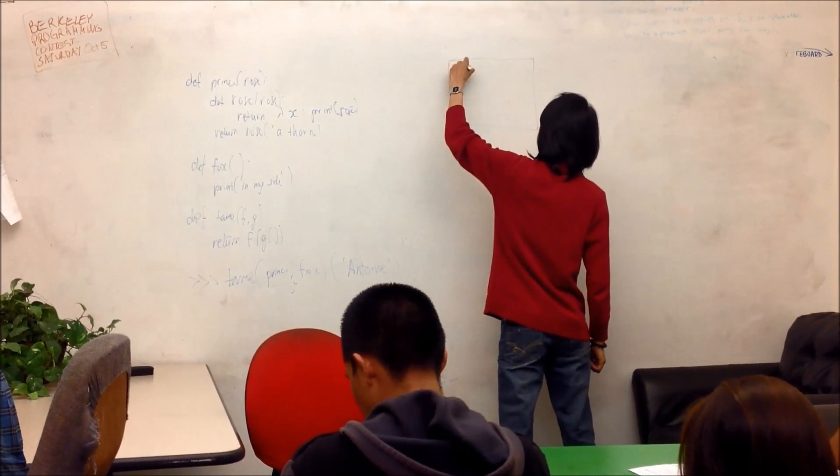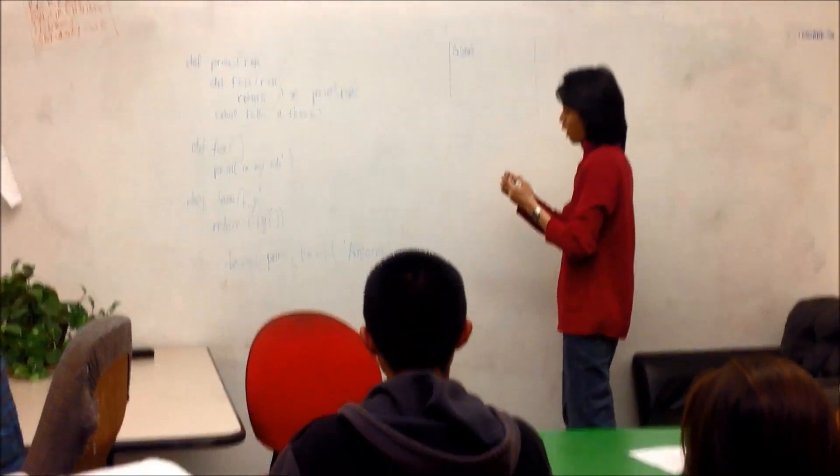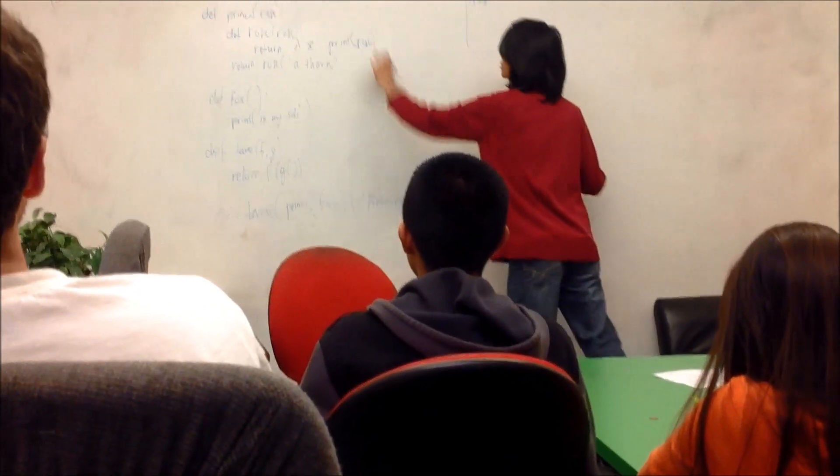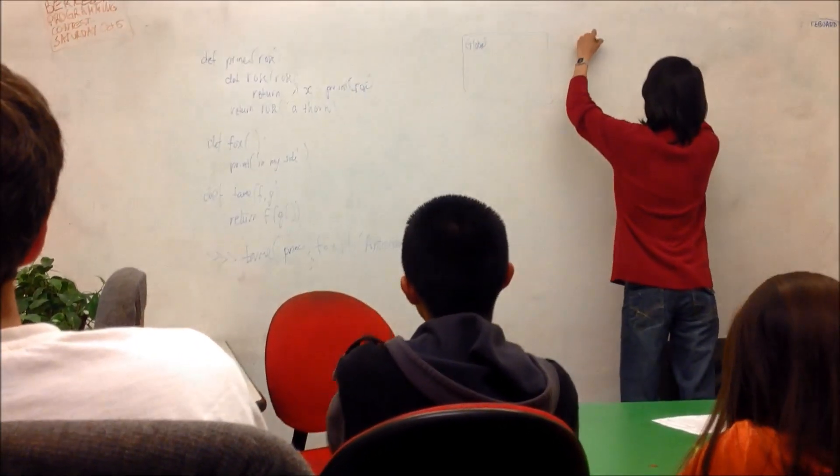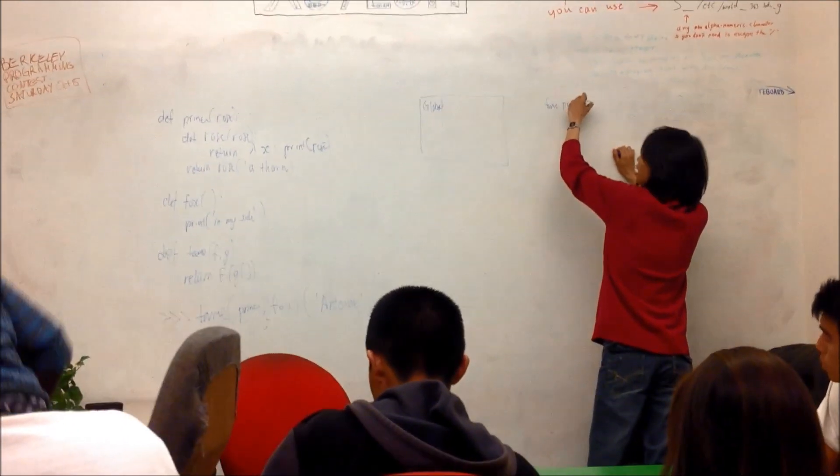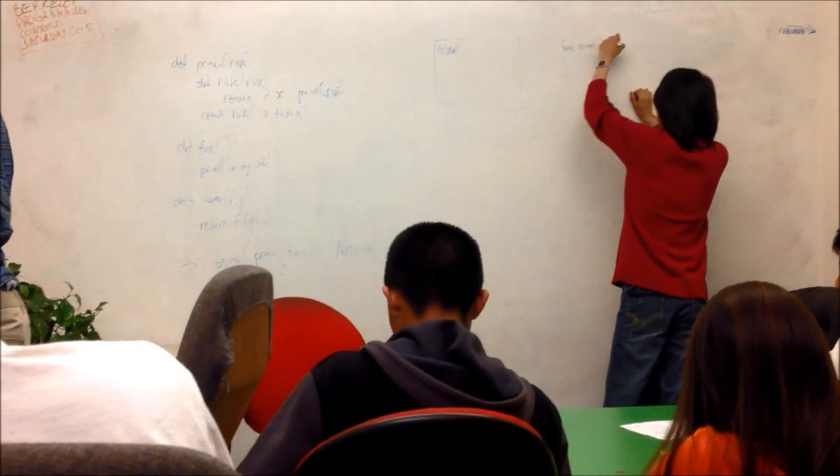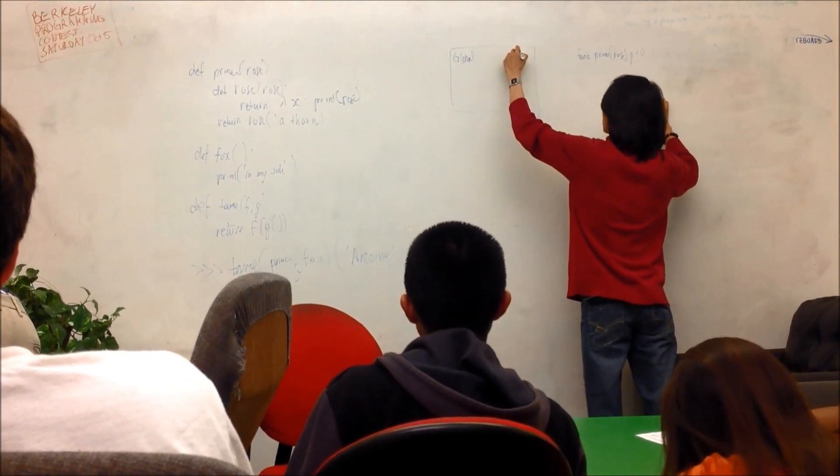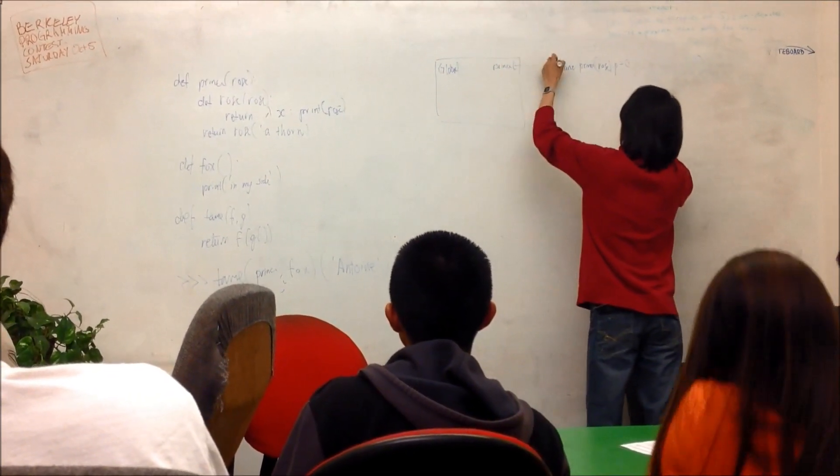So I'm just going to do this and I'm not going to take any questions. And if you have questions, send me an email because I really have to run after that. The first thing I have to do is define prince. So I just make a function prince which takes in a rose and its parent is global. And then I bind prince to this function.